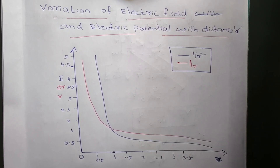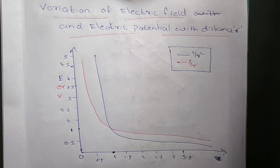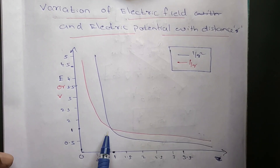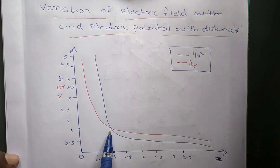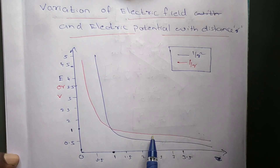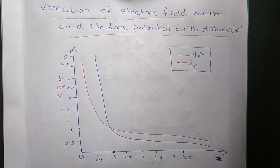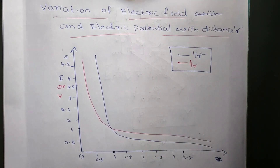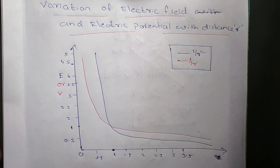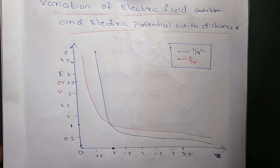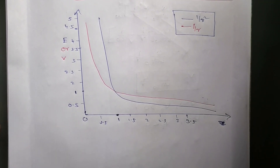I am going to explain how this graph came about. You may have a doubt about why the lines are intersecting and why the electric potential comes up here — it looks a little like this. I am going to explain how it came to look this way.